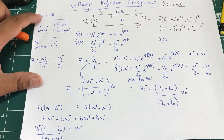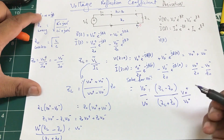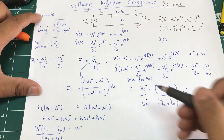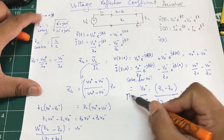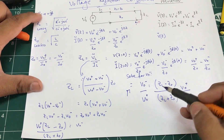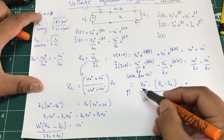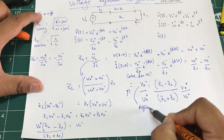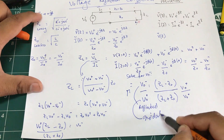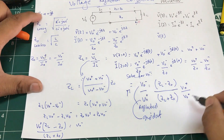Dividing both sides by V0+ gives us V0- / V0+. Let's call this the reflection coefficient Γ. Reflection coefficient is the reflected voltage V0- divided by the incident voltage V0+. So the final definition is: Γ = V0- / V0+.